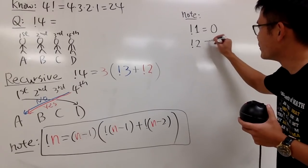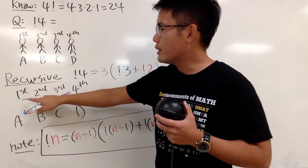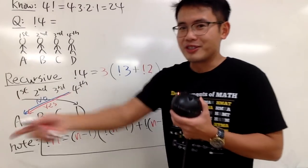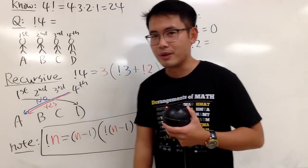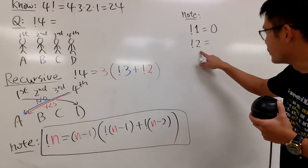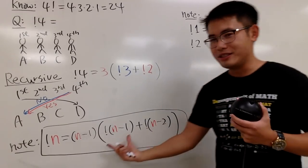Here we go. Next, subfactorial 2. So just imagine you have two people, right? Just two people. Of course, the only way is you give the... They just pretty much exchange each other, right? You give A to the second person, and you give B to the first person. So subfactorial 2 is equal to 1. And you know what? Congratulations! Because once you have these two starting, you can use this.